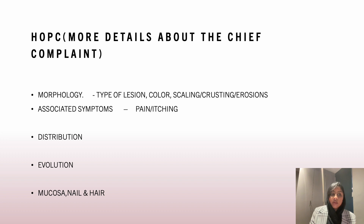Next, ask about systemic features. There can be many systemic features associated with dermatological conditions. For example, in exacerbated psoriasis there can be fatigue, arthritis, or arthralgia. In lymphoma, there can be night sweats and weight loss — a similar history can be found in tuberculosis. So it's very necessary to ask about systemic features if they are present.